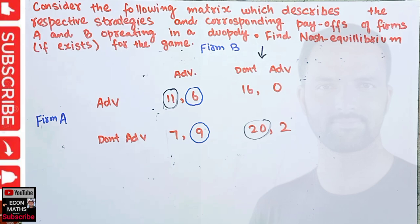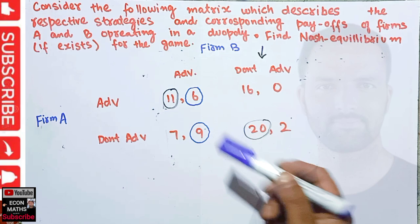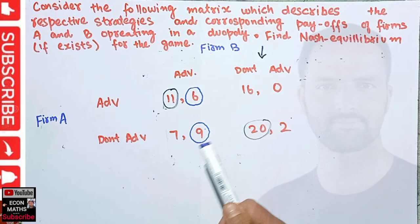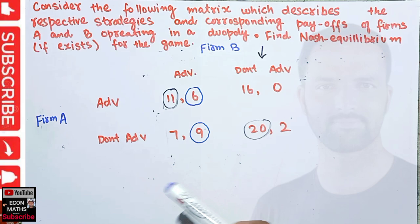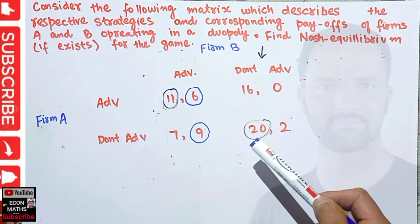Now, what is the Nash equilibrium for this game? Nash equilibrium occurs for a two-player game where, in a single cell, both values are encircled. Here we can see only one cell where two values are encircled. Nash equilibrium is the optimal outcome of a game where no player has an incentive to deviate from their chosen strategy after considering the opponent's choice.